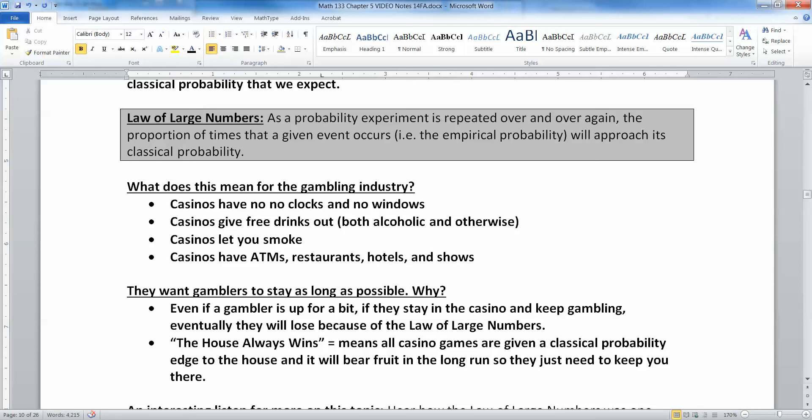So, that way, even if a gambler is up for a little bit, to the good, in the black. Then if they stay in the casino and they keep gambling, eventually they will lose because of the law of large numbers. This is what they mean when they say the house always wins. All casino games are stacked towards the house. They're given a classical probability edge to the house. And it will bear fruit in the long run. So, they just need to keep you there longer and keep you gambling and you will lose. Of course, everybody does.